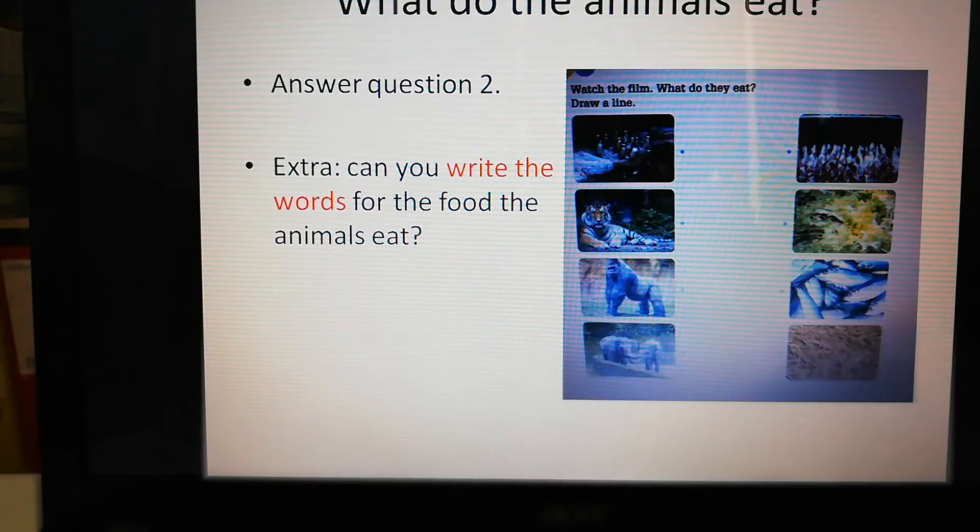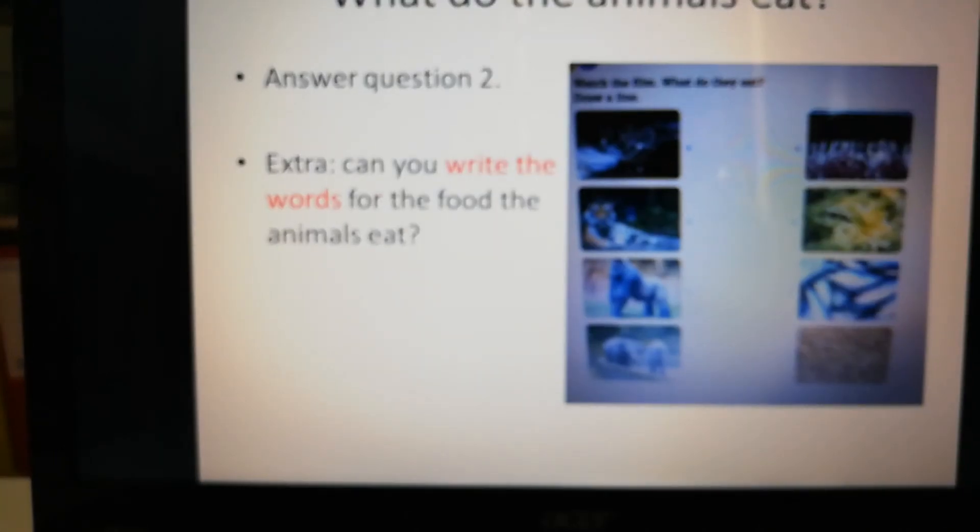Let's move on to question two. What do the animals eat? On the left hand side you see pictures of animals and on the right hand side you see what they eat. So you draw a line from the animal to the right food. But I would like you as well to write the words for the food next to those animals. So can you also write down what the word is for the food that they eat?